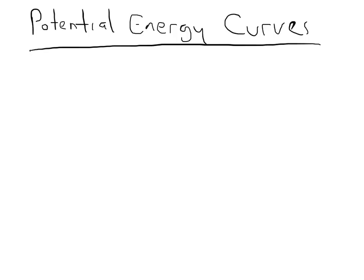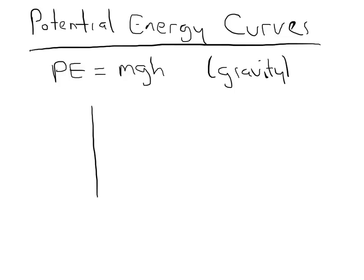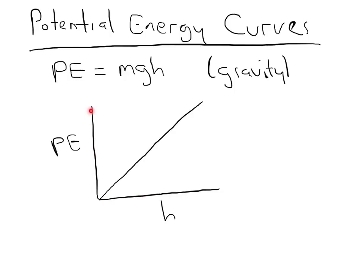In this video, we're going to be talking about potential energy curves. What we mean by that is, let's go through an example. The potential energy due to gravity is mgh, and as I increase my position, my potential energy also increases linearly. So when I double my height, I double my potential energy.